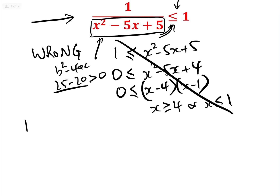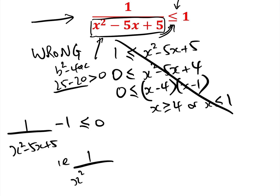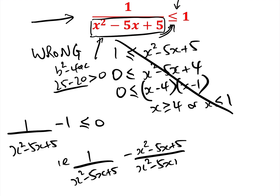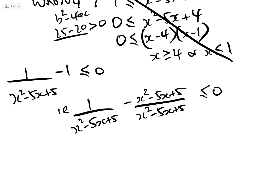Let's look at the right way. We rearrange to get: 1/(x² − 5x + 5) − 1 ≤ 0. That is: 1/(x² − 5x + 5) − (x² − 5x + 5)/(x² − 5x + 5) ≤ 0. Simplifying gives: (−x² + 5x − 4) / (x² − 5x + 5) ≤ 0.